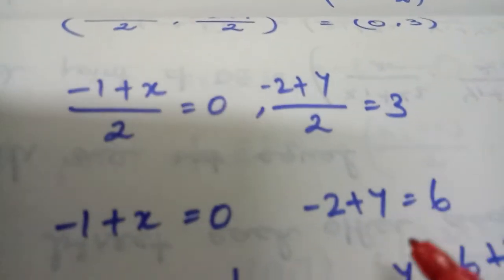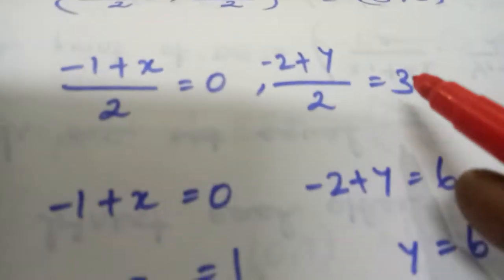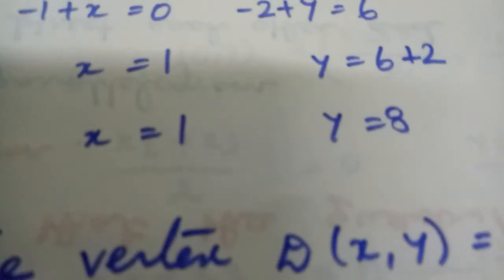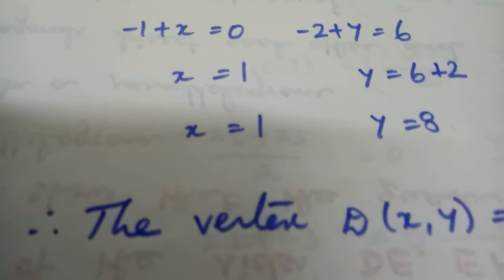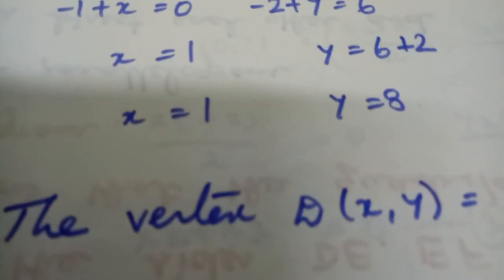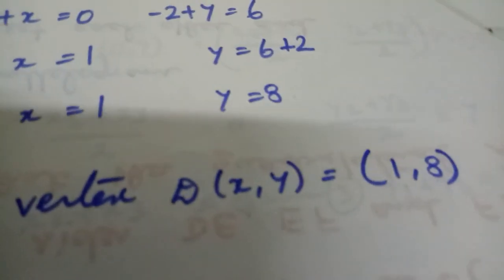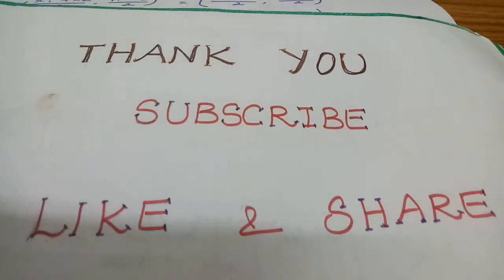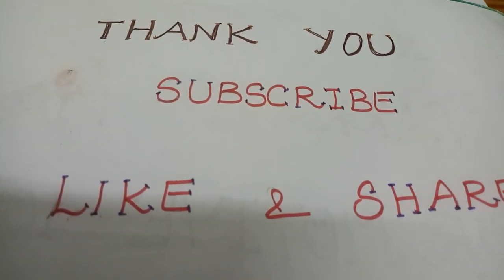So -1+x equals 0, which means x equals 1. And -2+y equals 6, so y equals 8. Therefore, the vertex D equals (1,8). Thank you children, like, share, and subscribe.